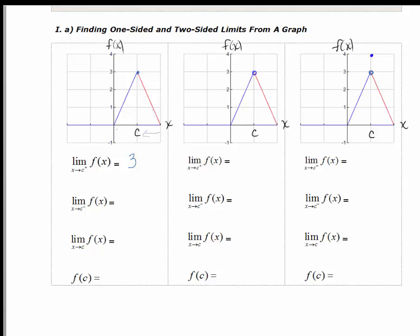If x approaches c from the left, the y values are again getting larger and larger until we get to 3. So the limit as x approaches c from the right is equal to 3, and the limit as x approaches c from the left is equal to 3. These are one-sided limits. When we don't see a plus sign or a minus sign, that is a two-sided limit. In order for a two-sided limit to exist, both the left and the right-hand limits have to be the same. Since both are equal to 3, the limit as x approaches c of f of x is equal to 3.